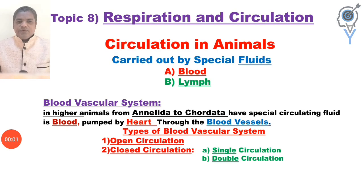Today we are learning about the circulation in animals. The circulating fluid — there are mainly two types of fluids present. The first fluid is blood and another fluid is called lymph.